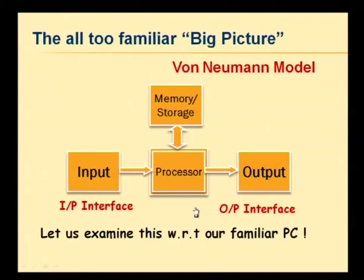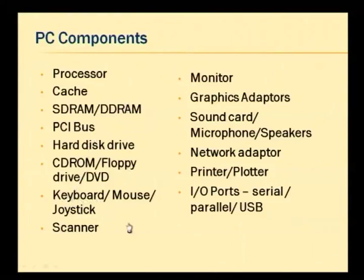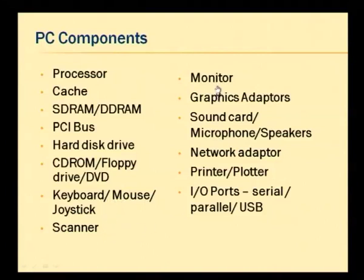We will take a couple of minutes to look at this picture with respect to the familiar PC that we have. Let us list down the PC components and identify which of these map onto each of the four modules. We have the processor, cache, SDRAM or DDRAM, PCI bus, hard disk drive, CD-ROM, floppy drive, DVD, keyboard, mouse, joystick, scanner, monitor, graphics adapters, sound card, microphone, speakers, network adapter, printer, plotter, IO ports, serial IO port, parallel IO port, and USB ports.